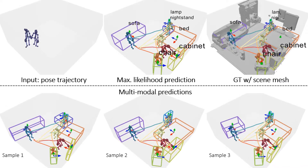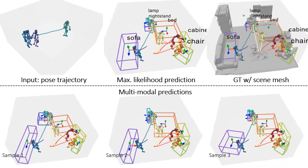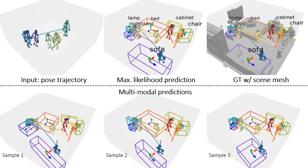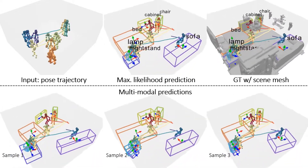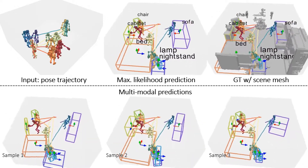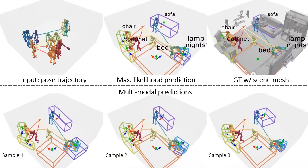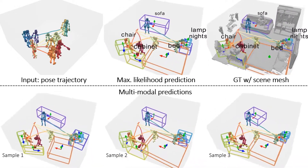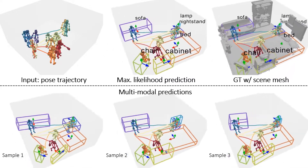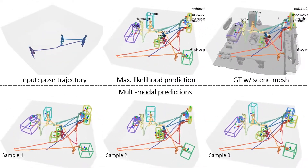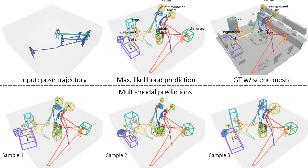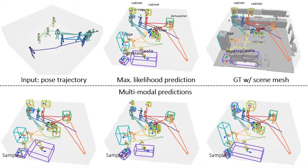Here, we present qualitative visualizations of our predictions. We show multimodal predictions along with maximal likelihood scene estimation from our probabilistic decoder. Our method can leverage object interaction correlations to model plausible estimates of the scene configuration.